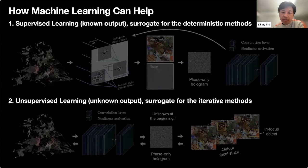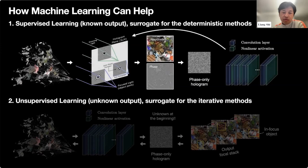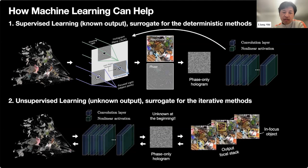So how can machine learning—in particular deep learning—help here? We discuss supervised and unsupervised learning. Supervised learning trains deep networks with known inputs and outputs, serving as a surrogate for deterministic methods like direct wave simulation, performing as well but being much more lightweight and faster. Unsupervised learning trains deep networks without knowing the ideal outputs; the ideal output is discovered during training, analogous to how iterative methods operate, making it a good surrogate for iterative optimization.